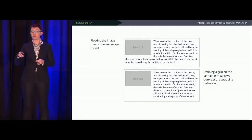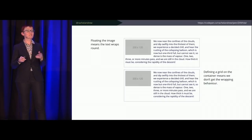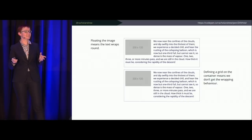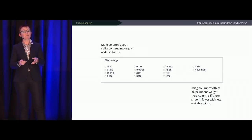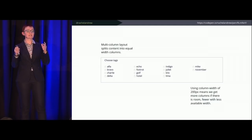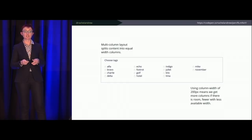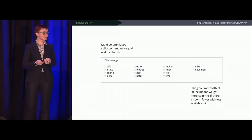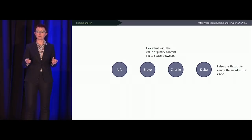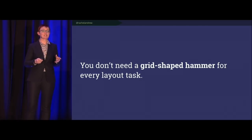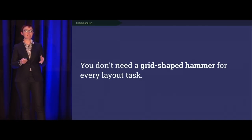If you want the wrapping behavior of a float, please use a float. If not, use flexbox or grid. Multi-column layout is really useful for things like a long list of checkboxes you want to collapse — 'as many columns as it'll fit, responsively.' It's not just for laying out a newspaper. Flexbox: if you've got a bunch of things you just want to space out or have equally absorb space, that's a flex layout. Don't use grid for everything just because you've learned it.